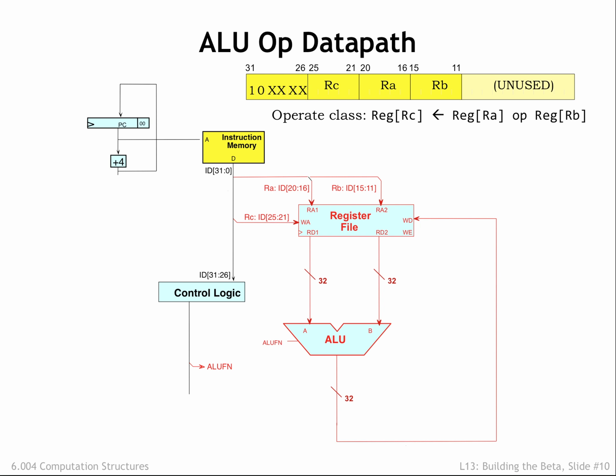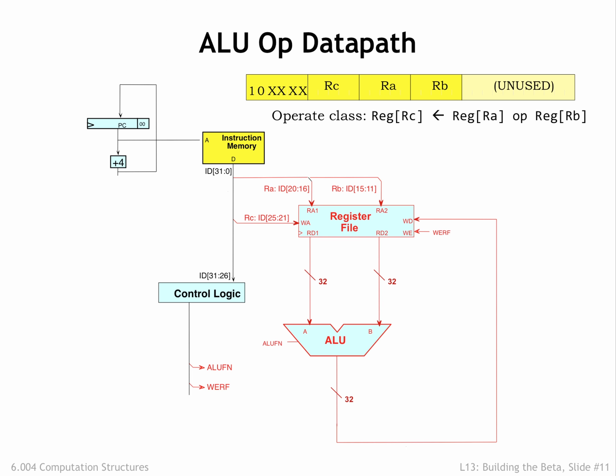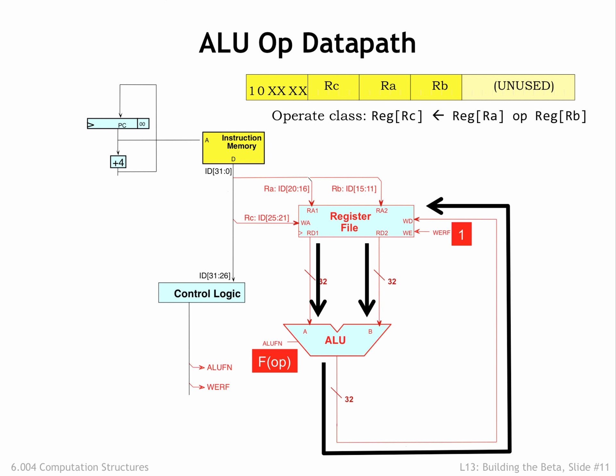The output of the ALU is routed back to the write data port of the register file, to be written into the RC register at the end of the cycle. We'll need another control signal — WRF, write enable register file — that should have the value 1 when we want to write into the RC register. After the instruction has been fetched, the RA and RB register values appear on the read data port of the register file. The control logic decodes the opcode bits and supplies the appropriate ALU function code. The result of the ALU's computation is sent back to the register file to be written into the RC register, with WRF set to 1 to enable the write.